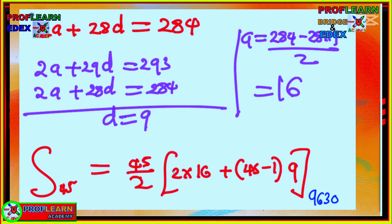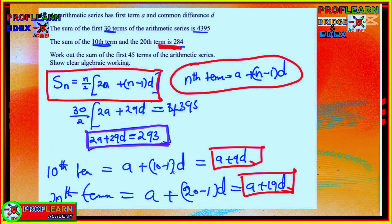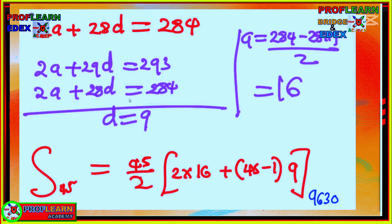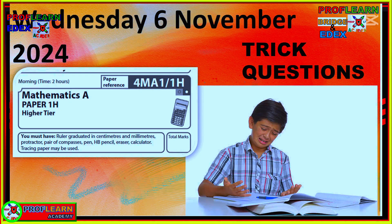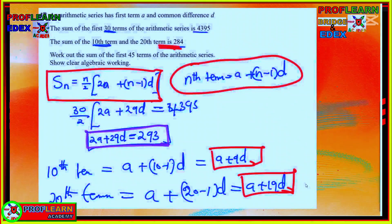The question then asks for the sum of the first 45 terms. Using the sum formula with a = 16 and d = 9, and working it out, you get 9630. So next time you are given a question on sequences and series, you will not be like this gentleman.